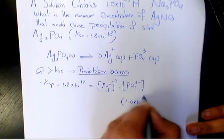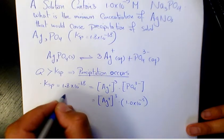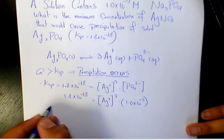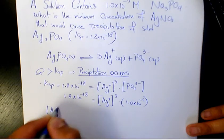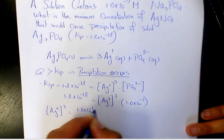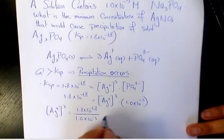[Ag+]^3 equals 1.8 times 10 to the power of negative 18. So [Ag+]^3 equals 1.8 times 10 to the power of negative 18 divided by 1.0 times 10 to the power of negative 5.